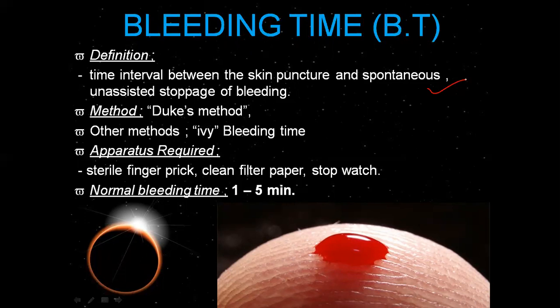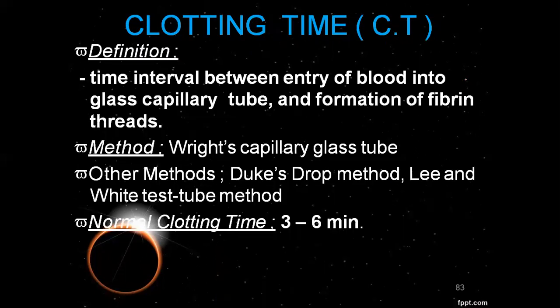For the Duke method, we use a sterile lancet to prick the skin, then clean with filter paper to absorb blood and note the stoppage time. The normal bleeding time is 1 to 5 minutes.